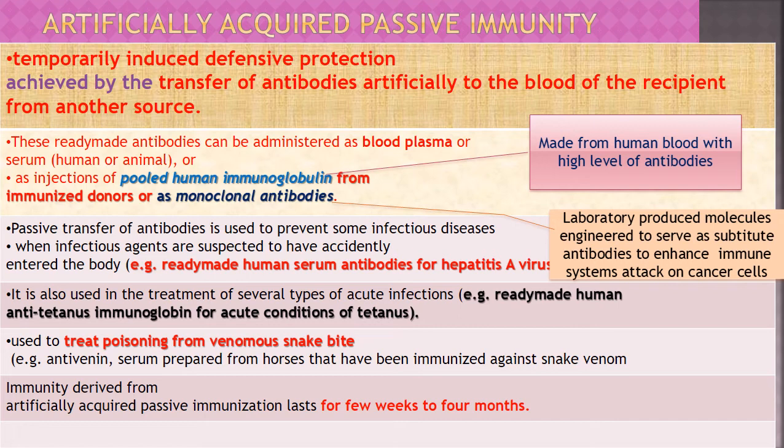Passive transfer of antibodies is used to prevent some infectious diseases when infectious agents are suspected to have accidentally entered the body. For example, ready-made human serum antibodies for hepatitis A — a virus that affects the liver, causing yellowing of the skin and yellow urine, spread through contaminated food and water — can be administered to prevent this infection.